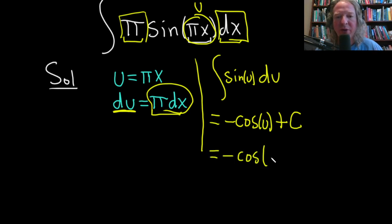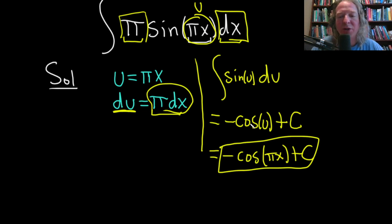And so this is equal to minus cosine of u. And u was πx, and then we still have our constant of integration, capital C. So it's always really important to go back to the original variable, which in this case was x.